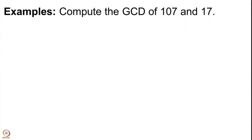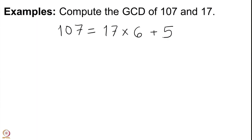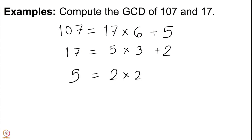Let us do one more problem for better practice: what is GCD(107, 17)? We apply the division algorithm — 17×6 = 102, so 107 = 17×6 + 5, remainder 5. Now we work with 17 and 5: we write 17 = 5×3 + 2. We still have not got our remainder to be 0, so we need to continue.